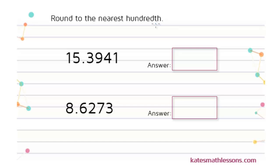So in this case, since we're rounding to the nearest hundredth, we need to identify the number in the hundredth spot. The first number after the decimal is in the tenth spot. The second number is the hundredth place. So we need to draw a line after the nine.